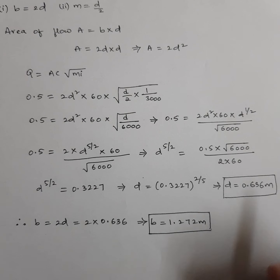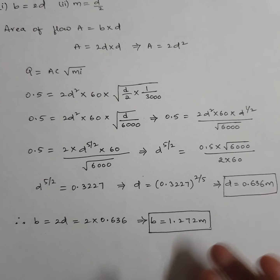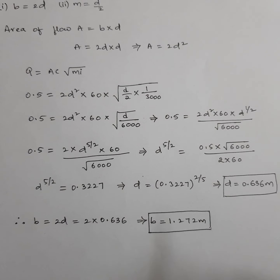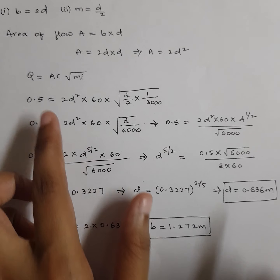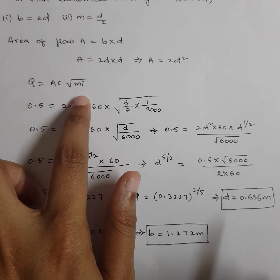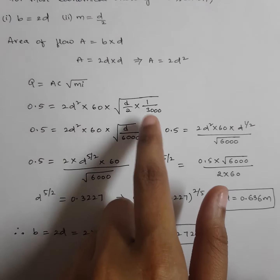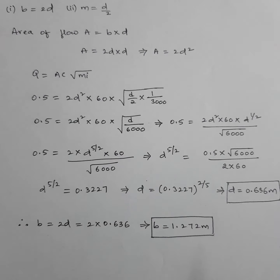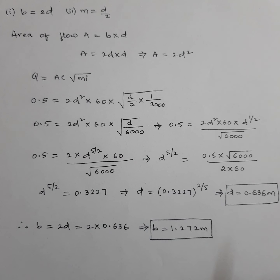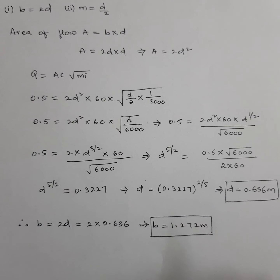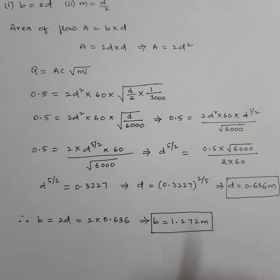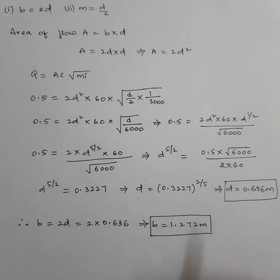Another model of problem could give you values of B and D and ask you to calculate the bed slope I. In that case, using the same formula Q equals A·C·√(MI), only I will be unknown and you can calculate it. This is how you solve for most economical rectangular section.